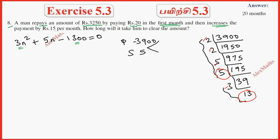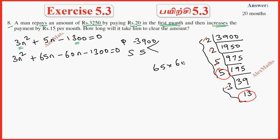Expanding: 3n squared plus 65n minus 60n minus 1,300 equals 0. Checking the factors: 65 times 60 gives the product, and the sum matches with 65n minus 60n.